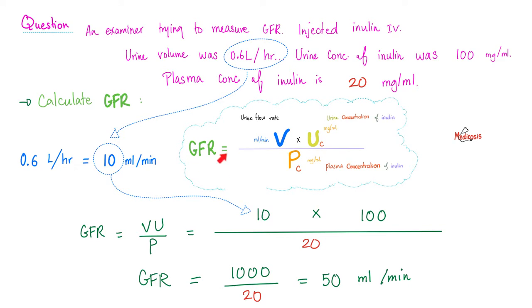Yes! Do you remember the equation? GFR is the same as inulin clearance, which equals V times U over P — where V is the urine volume or urine flow rate in mL per minute, U is the concentration of inulin in the urine, and P is the concentration of inulin in the plasma. The measuring unit of GFR is mL per minute, so we have to convert: 0.6 liters per hour equals 10 mL per minute.